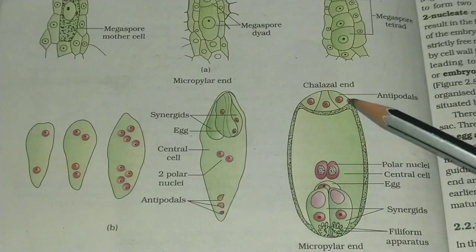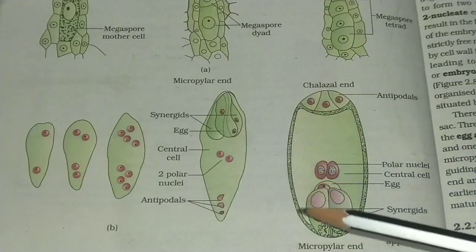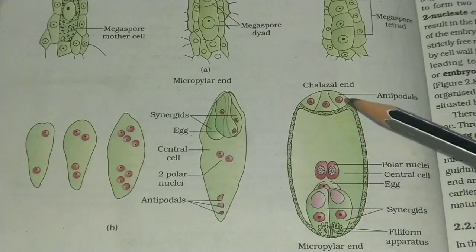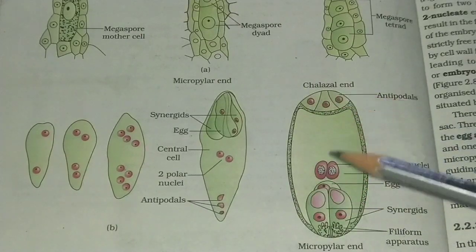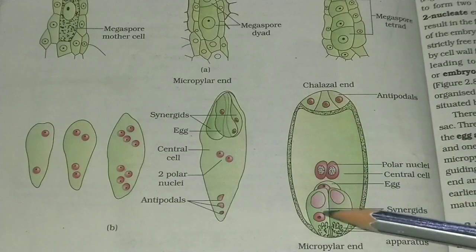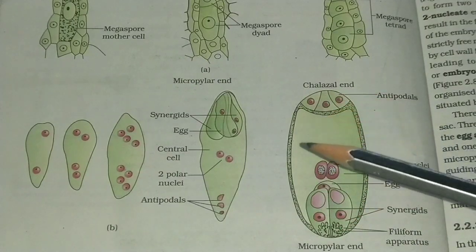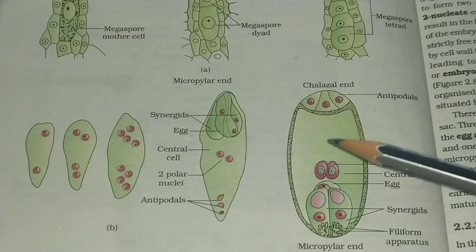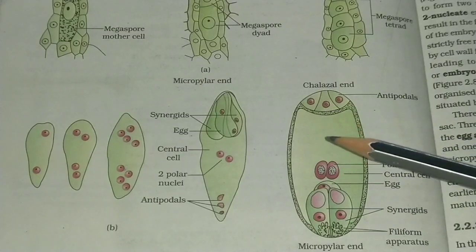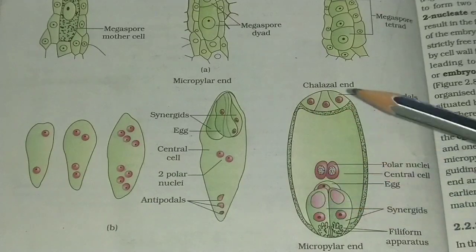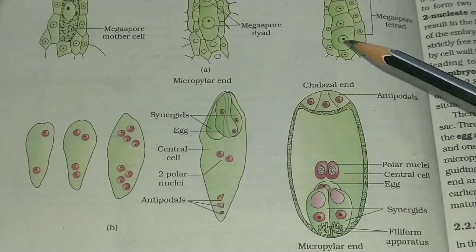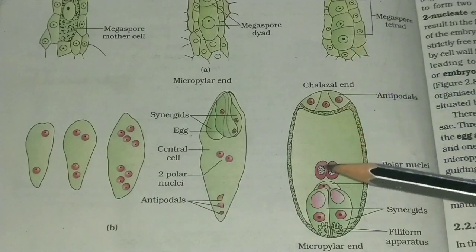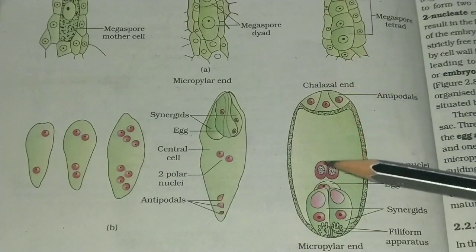So here we can see this is the mature embryo sac. This mature embryo sac has a seven-cell structure but contains eight nuclei. This embryo sac is formed from a single mega spore, so it is known as monosporic development.